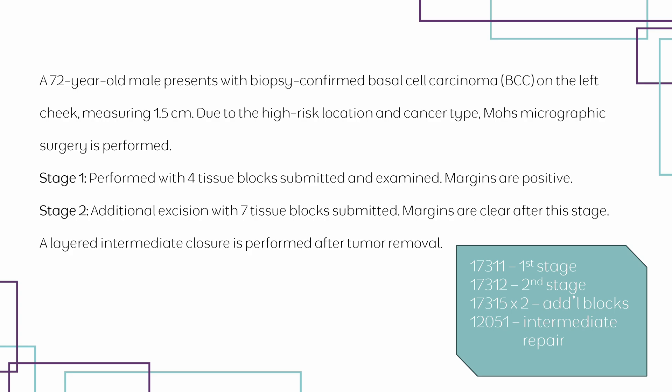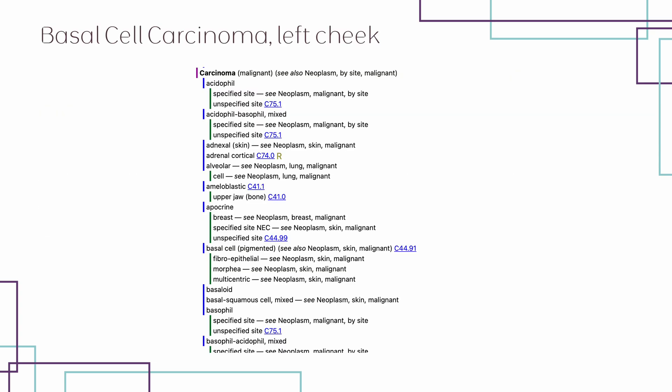Now let's find the ICD-10-CM code. The condition that prompted the procedure is a basal cell carcinoma on the left cheek. The main term in the alphabetic index is carcinoma — we do not default to the table of neoplasms because carcinoma is more specific than a general malignant neoplasm. Under carcinoma we find an entry for basal cell; however, there is no entry for skin of the face, so we follow the see-also instruction, which directs us to the table of neoplasms, then skin, then malignant.